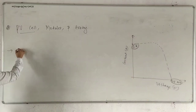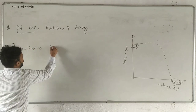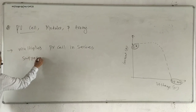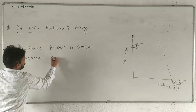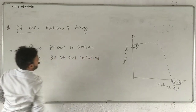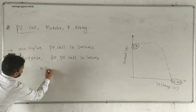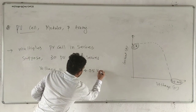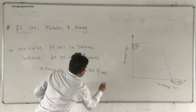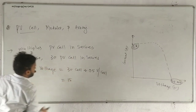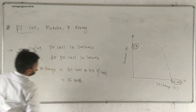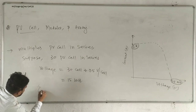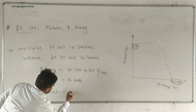We can connect multiple PV cells in series. Suppose we connect 30 PV cells in series — how much voltage? Voltage will be 30 cells multiplied by 0.5V per cell. So our voltage will be 50 volts. But current will be same, that is 2 EPM.